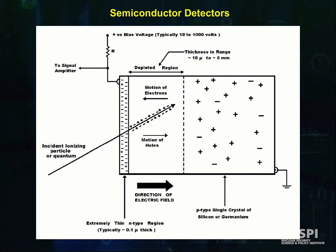As shown in the diagram here, the p-n junction is made as thin as possible. By applying a reverse bias voltage, the depleted region that acts as the detector can be made fairly large.